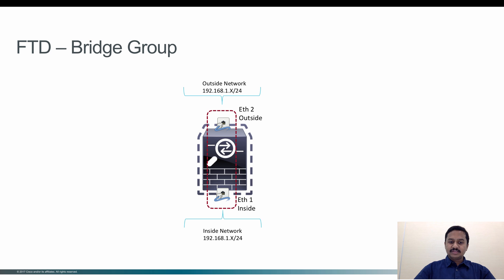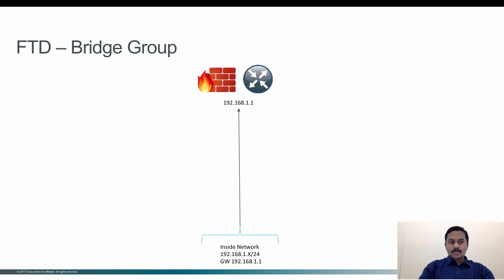You can create access control policies to control the traffic between the inside network and the outside network, even though they are in the same IP domain. One of the use cases for using a bridge group is when you have an existing network where you already have either a firewall or a router and you want to introduce a next-gen firewall without any change to the logical network.